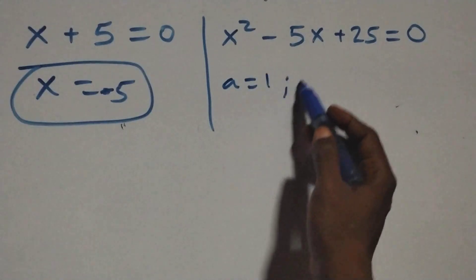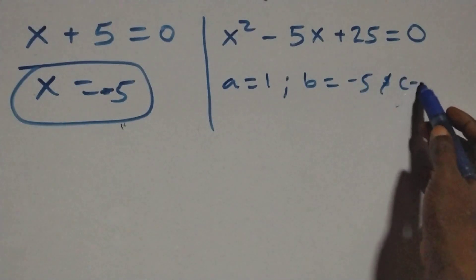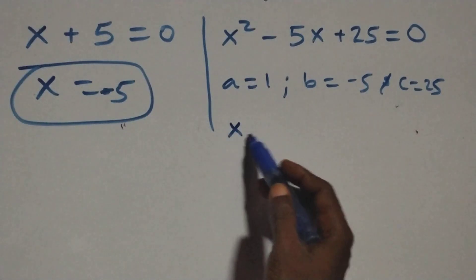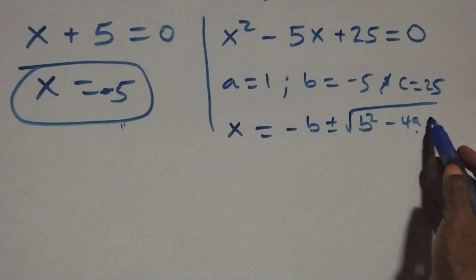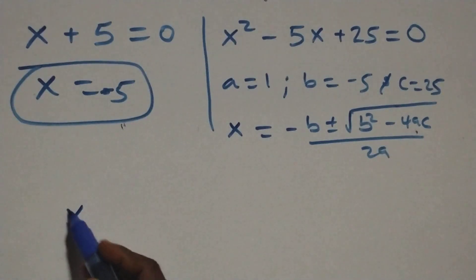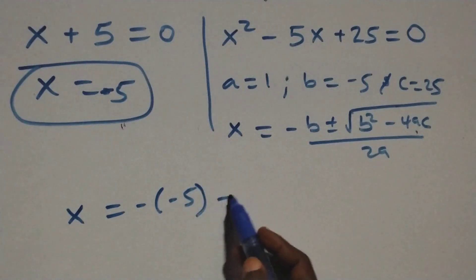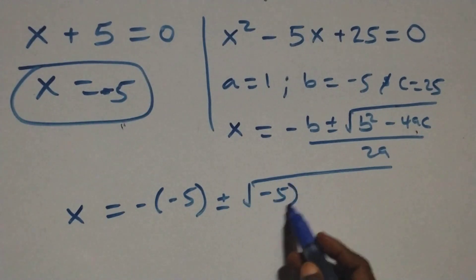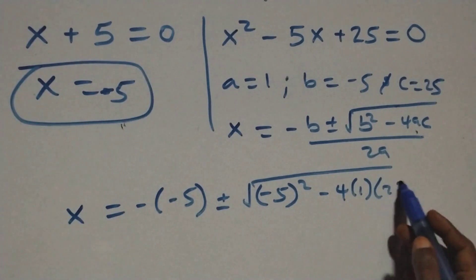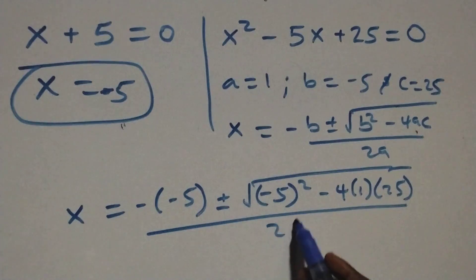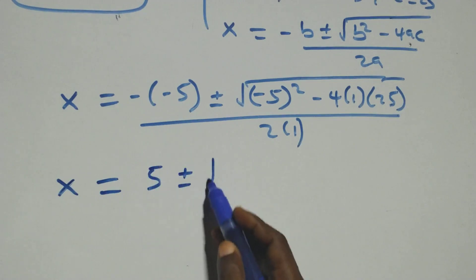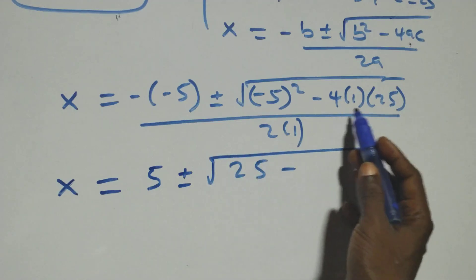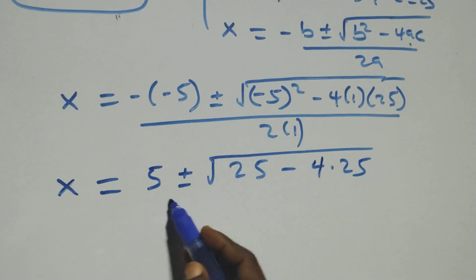For the quadratic x squared minus 5x plus 25 equals 0, we have a equals 1, b equals negative 5, and c equals 25. Applying the quadratic formula, x equals negative b plus or minus square root of b squared minus 4ac over 2a. That gives x equals 5 plus or minus square root of 25 minus 100, over 2.